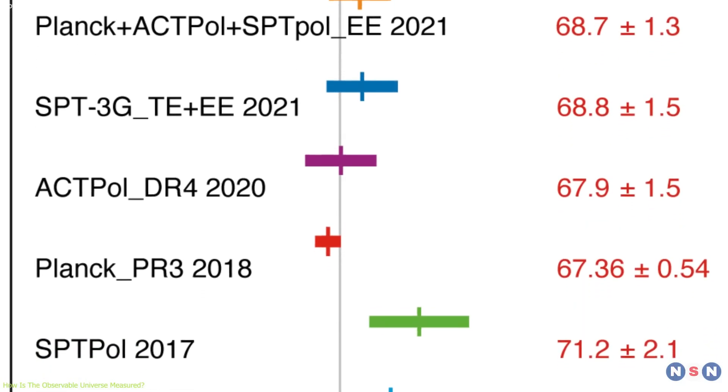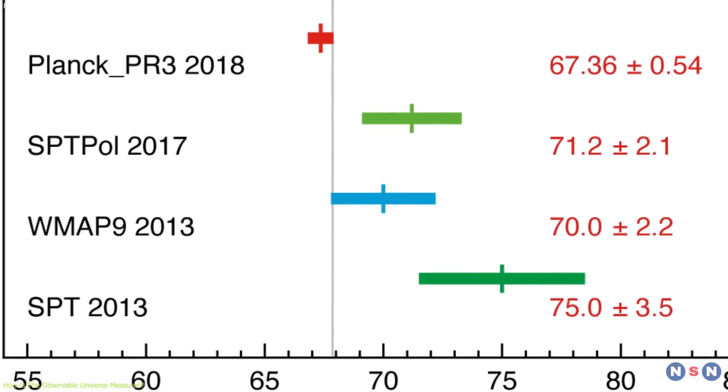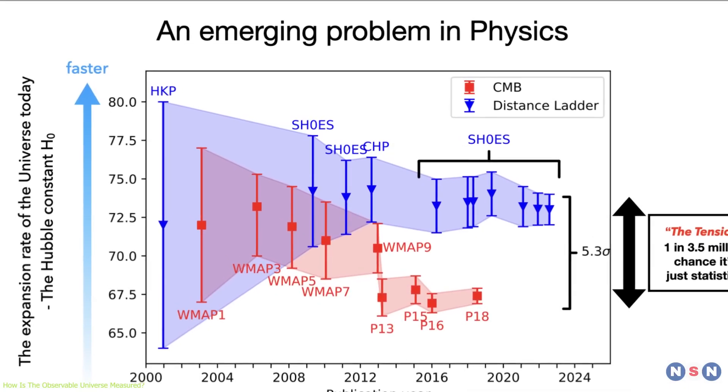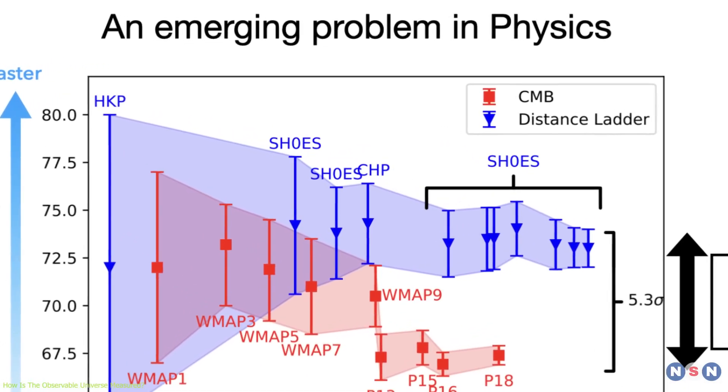Each method has its own assumptions and uncertainties, and the results can vary by a few percent. This discrepancy is known as the Hubble Tension, and it is one of the biggest puzzles in modern cosmology.